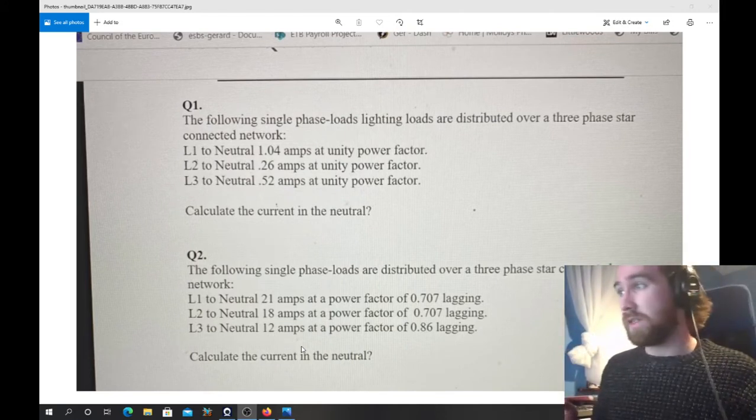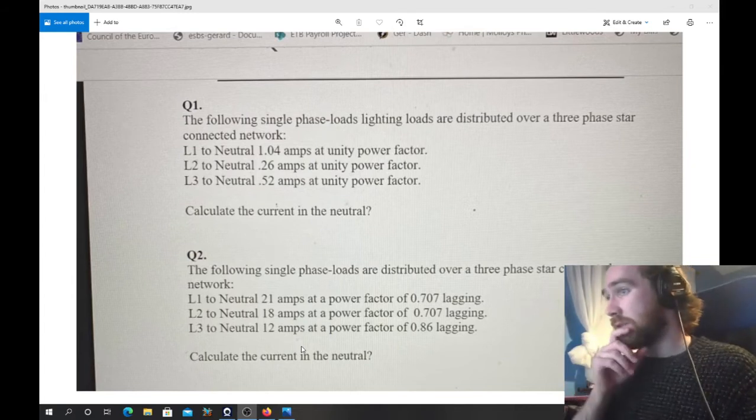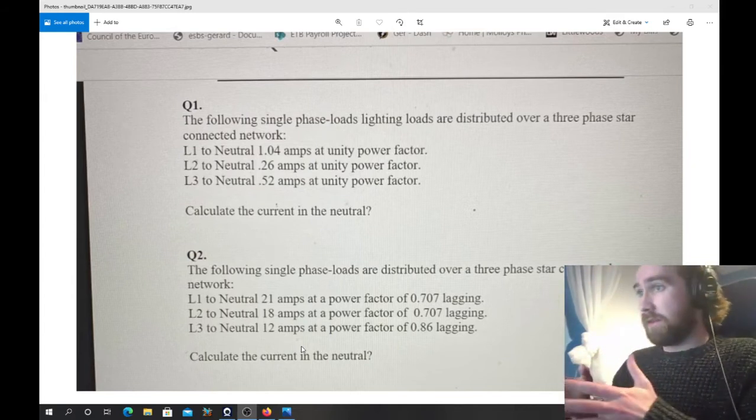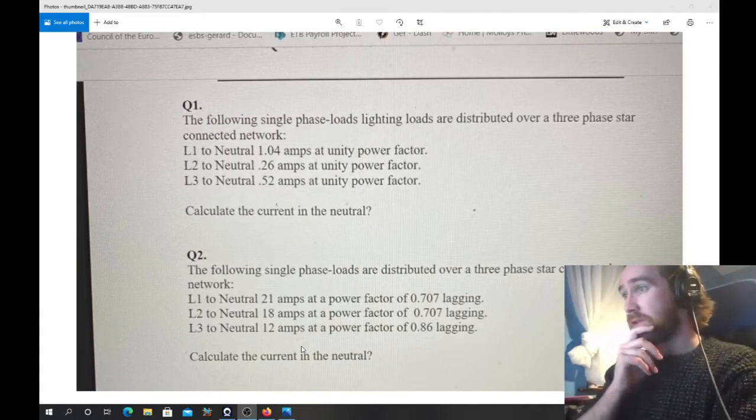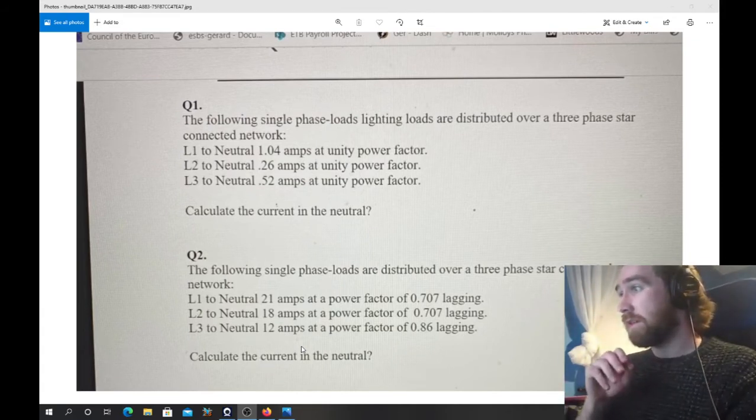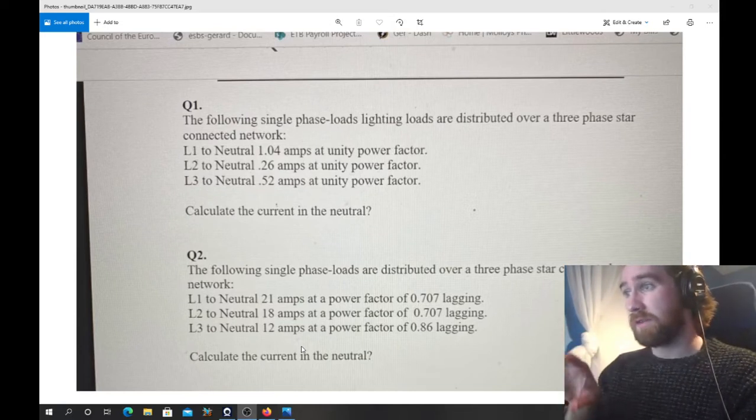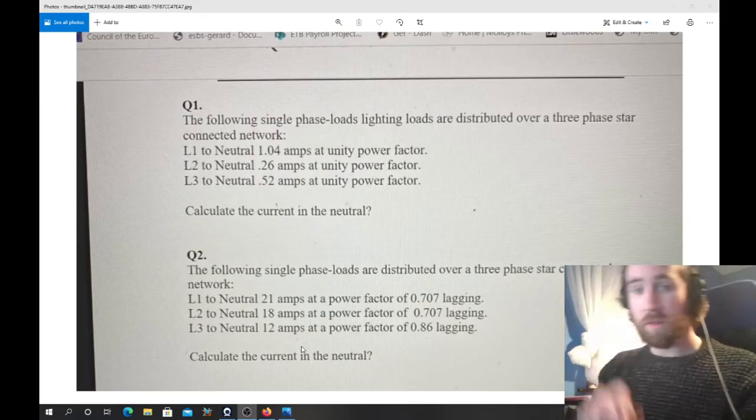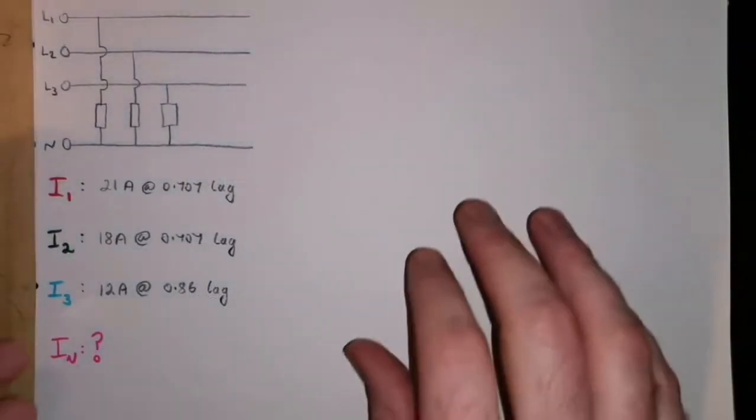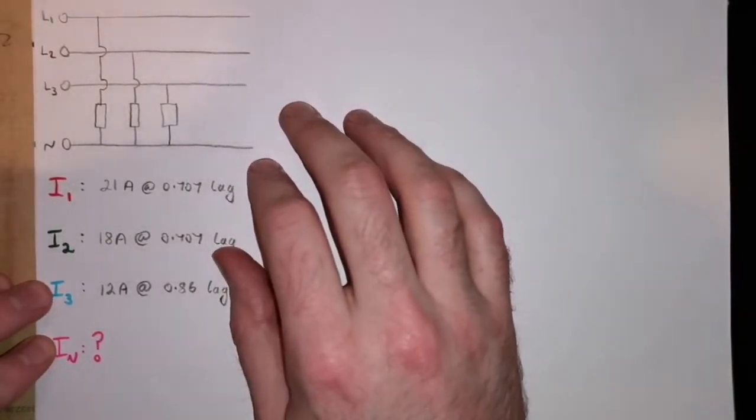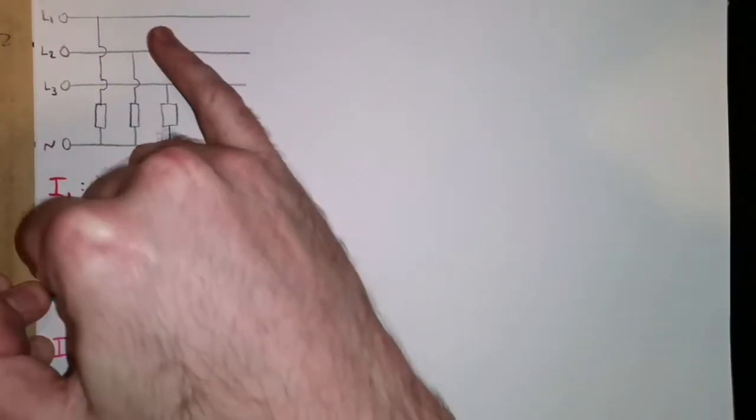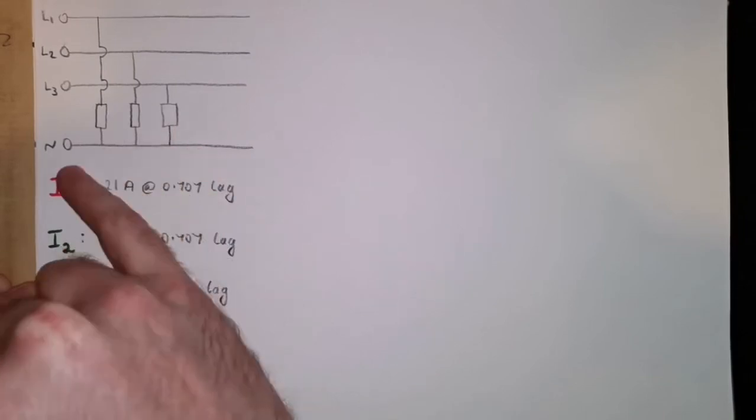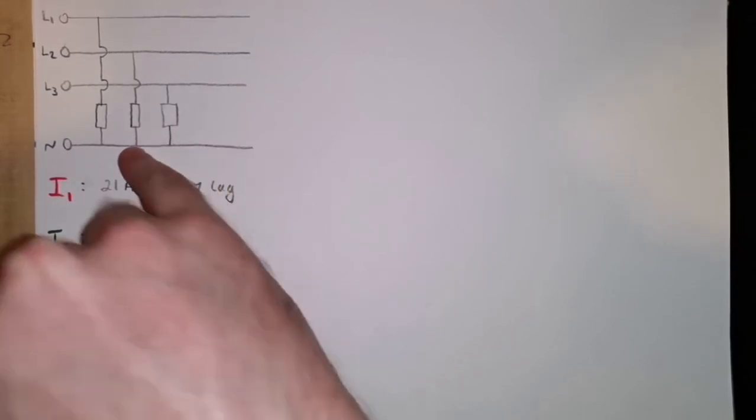I thought I'd go through a solution here and make it available on a video so it can be viewed over and over. The question describes three single phase loads on a star-connected network, and it gives us the magnitude of the currents and the power factor. To move to the overhead camera, I've kind of sketched out what that system would look like, where we have our three phases, our three single phase loads that are star-connected, so they're all connected to the same point.